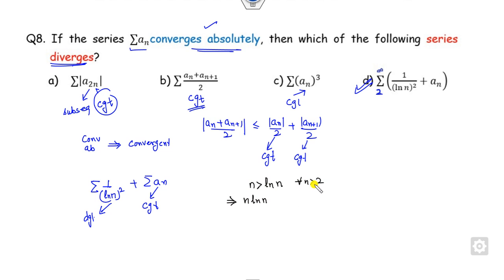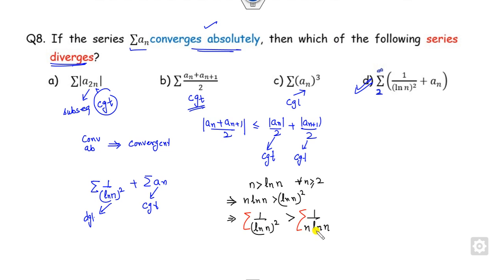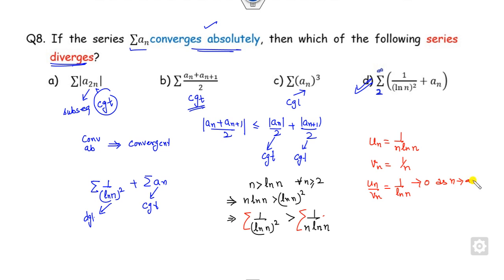Since it is given that the series is convergent, our target is to check whether this term is divergent or not. We know that n is always greater than log n. Since we need to analyze this, I can multiply by log n for all n greater than or equal to 2. So multiplying both sides by log n, I can write 1/n as greater than 1/(n·log n). Now putting this as a series, by the comparison test, taking u_n = 1/(n·log n) and v_n = 1/n, the ratio u_n / v_n goes to 0 as n approaches infinity. Since this is a finite value, u_n behaves like v_n. But 1/n is a divergent series by the p-test (p=1), so 1/(n·log n) is also divergent.